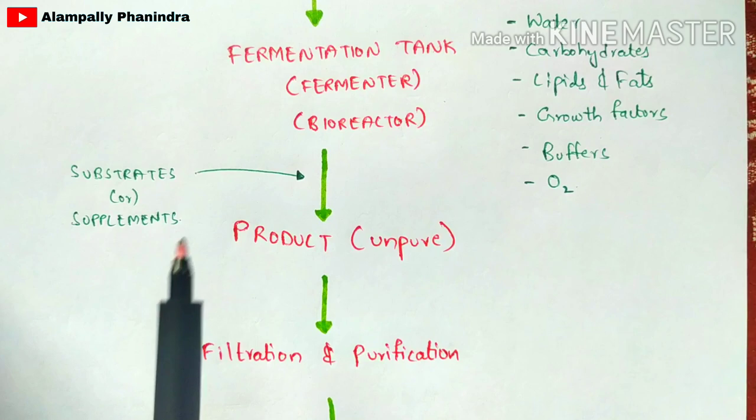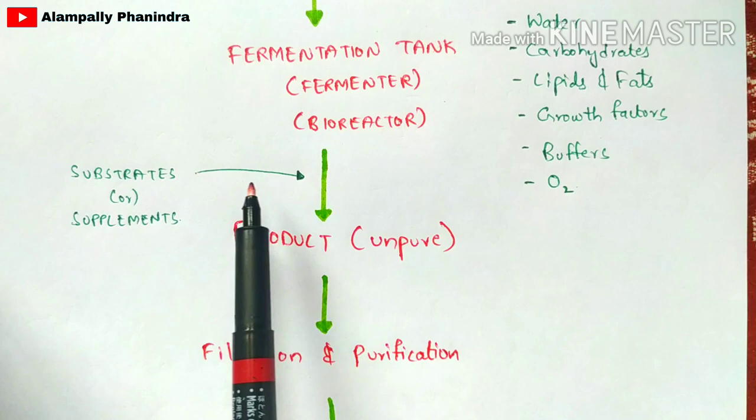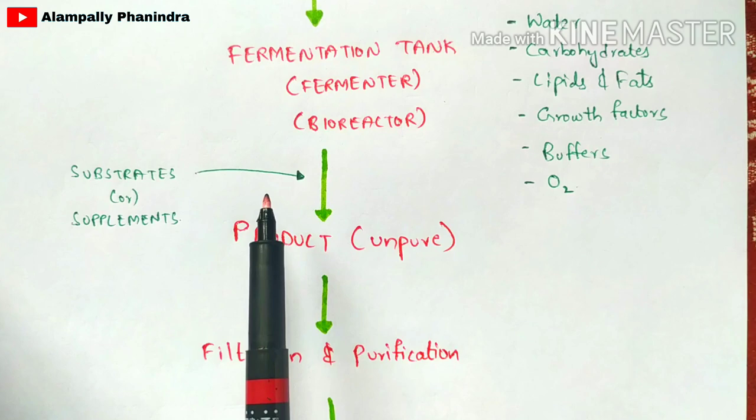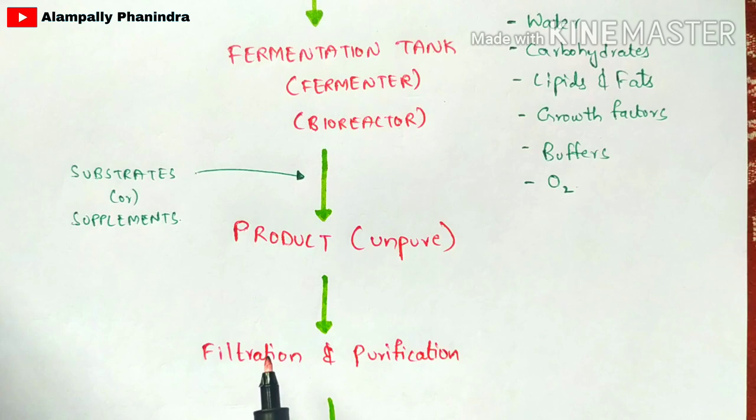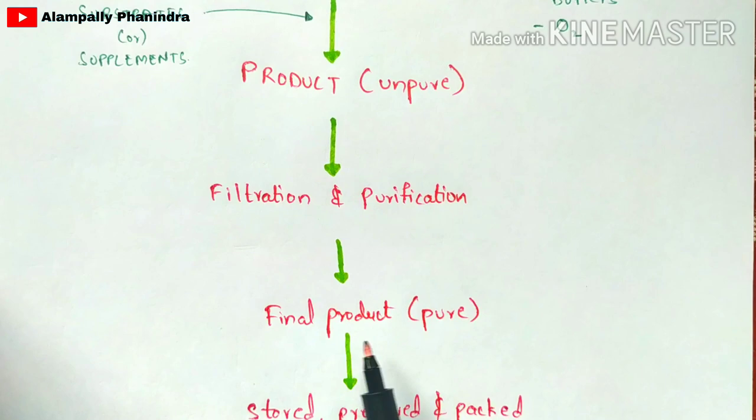The secondary metabolites come out through the outlet in an impure form. During fermentation, substrates or supplements are also added — especially for alcohol production. To obtain the pure product, filtration and purification are performed. Once filtered and purified, the final pure product is obtained, then stored, preserved, packed in bottles, and supplied to markets for the public.